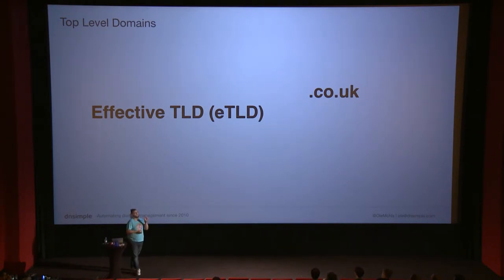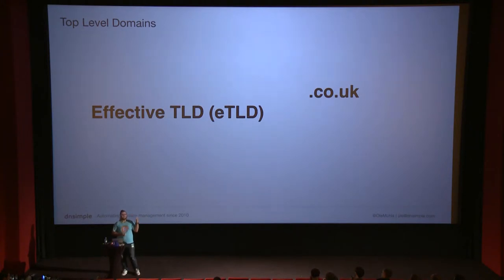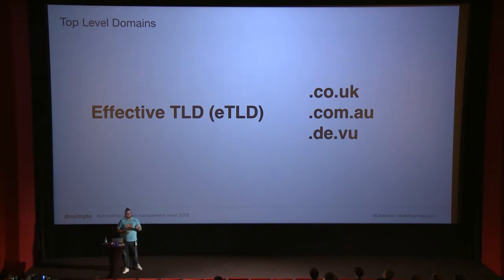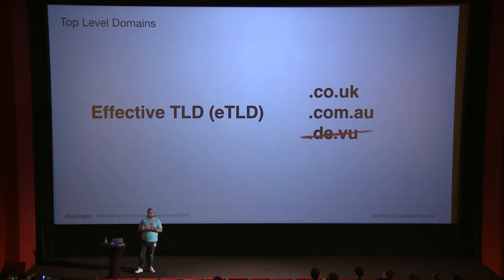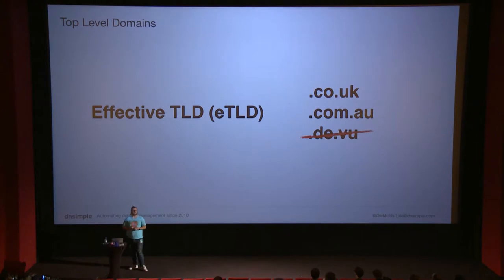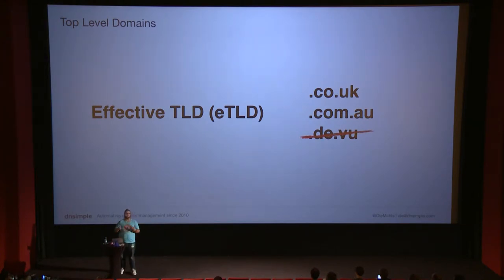A top-level domain by specification is always the last bit after the last dot. But when we talk about registries, co.uk has its own registry, as does com.au. There's also dev.u — not an eTLD, just a product. eTLDs can't be parsed algorithmically. So the internet community maintains a large text file of eTLDs, used across Mozilla, Google, DNSimple, Comodo, VeriSign, and many more. We all share this manually maintained list of effective TLDs — already quite inefficient.